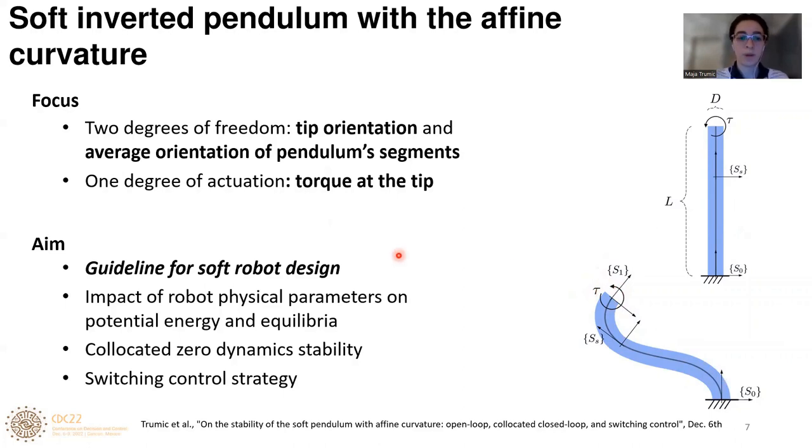The aim of our paper is to provide a guideline for soft robot design. We want to investigate how physical parameters of a robot affect potential energy shape and pattern and stability of equilibrium points. Then we examine the stability of collocated zero dynamics of such underactuated system. Finally, we propose a switching control strategy.